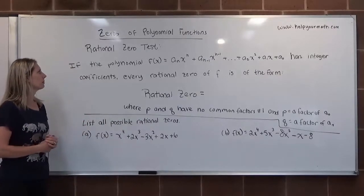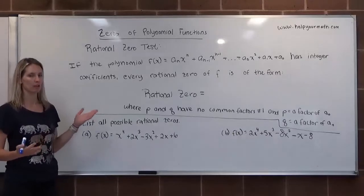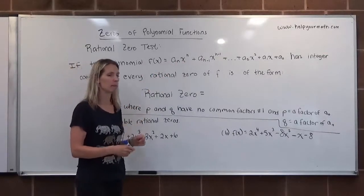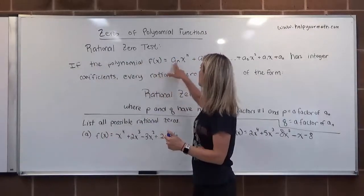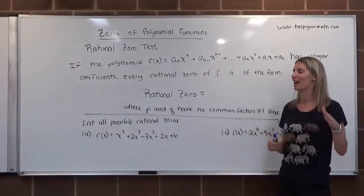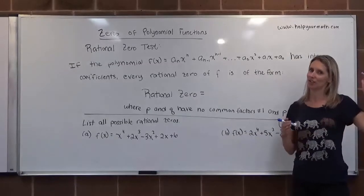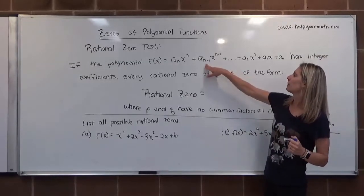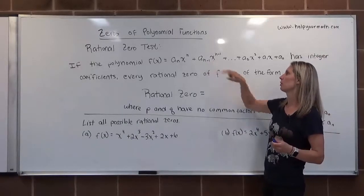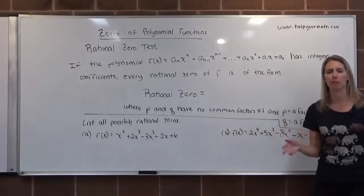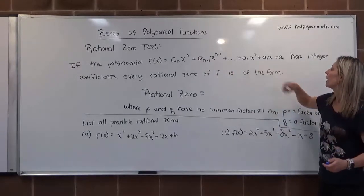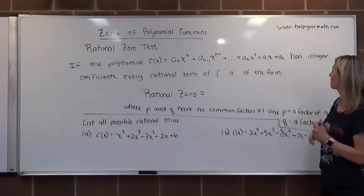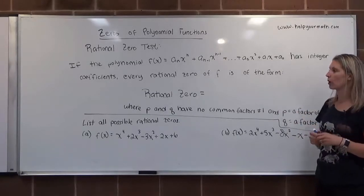Here's the definition. If the polynomial F of X, so F of X, our generic polynomial, we say A sub N times X to the N. Remember that just means A sub N is the leading coefficient and X to the N is the largest, N is the largest exponent, plus A sub N minus 1, that's the coefficient of the second term, times X to the N minus 1, plus blah blah blah, plus A sub 2 X squared, plus A sub 1 X, plus A sub 0. All right, so if that polynomial F of X has integer coefficients...